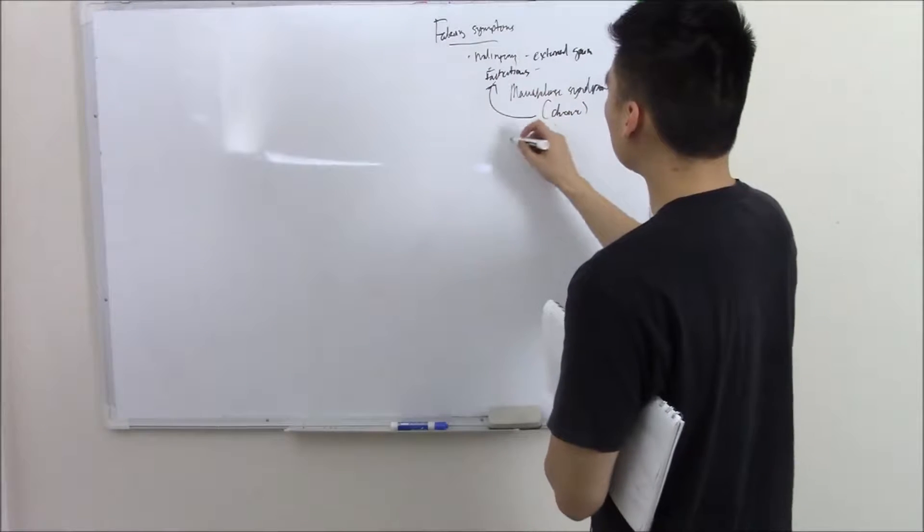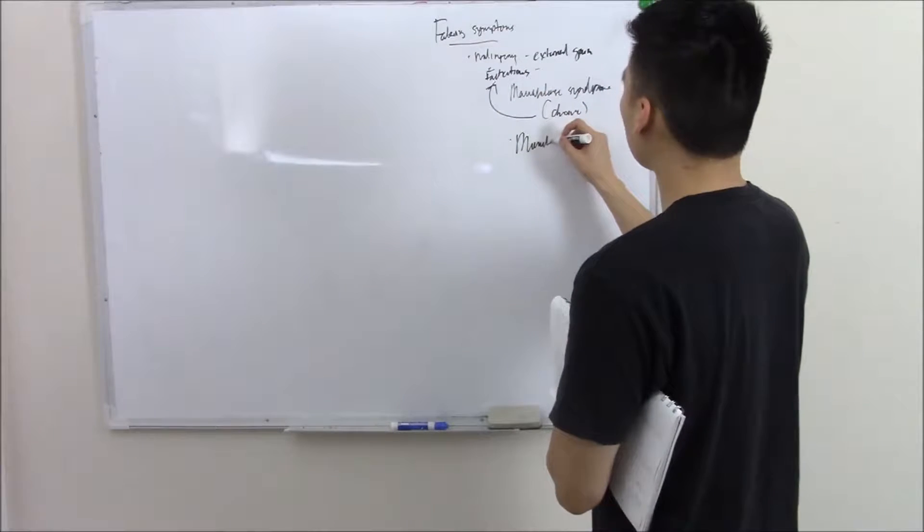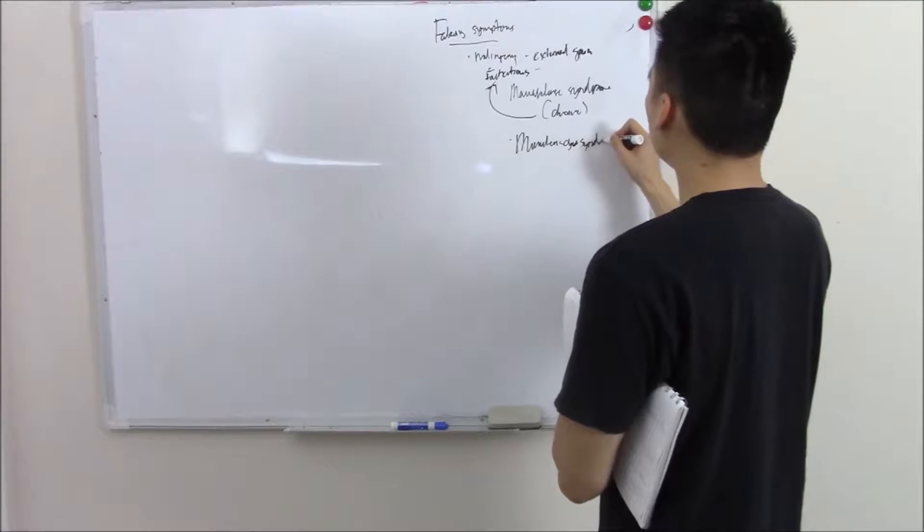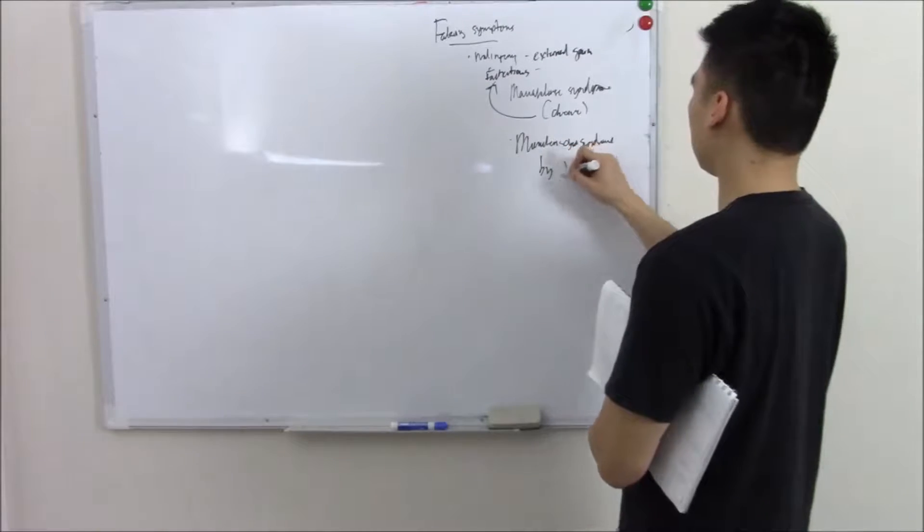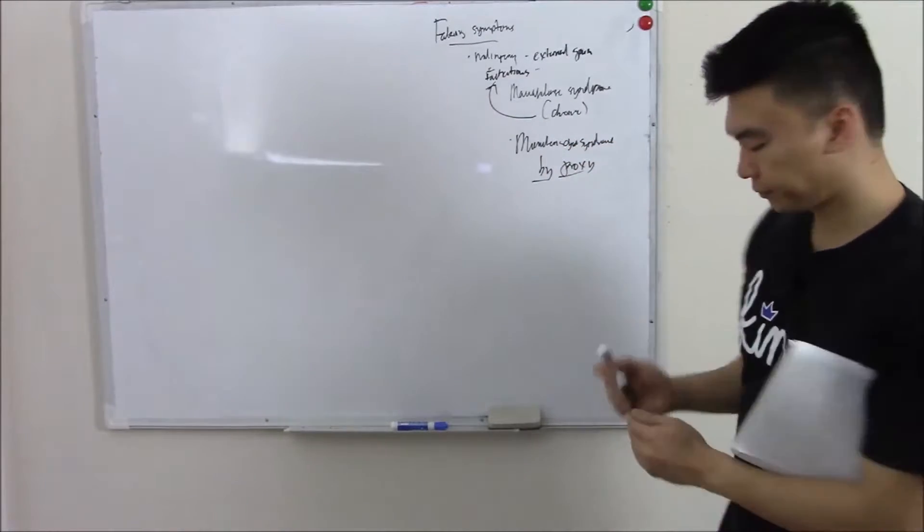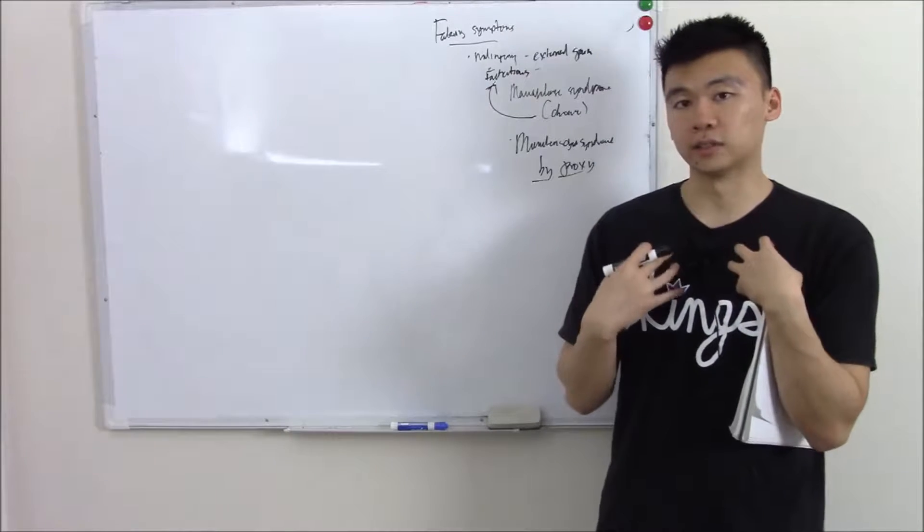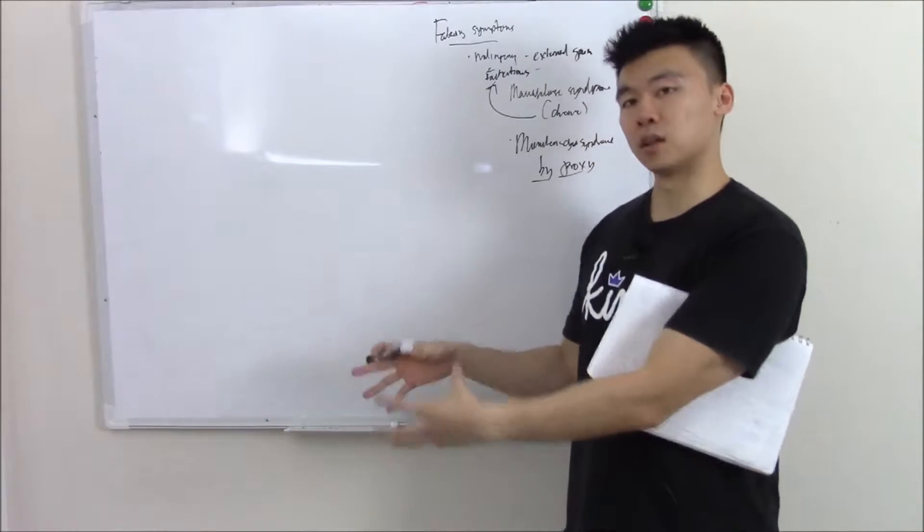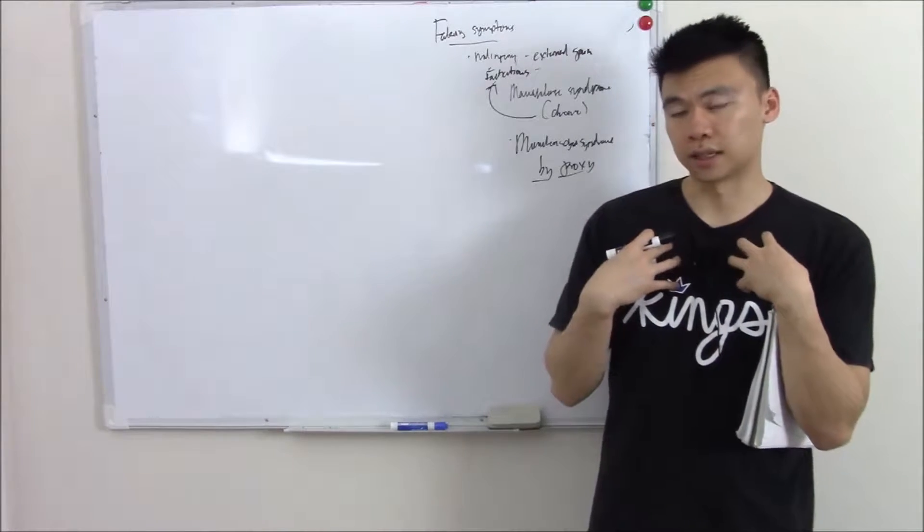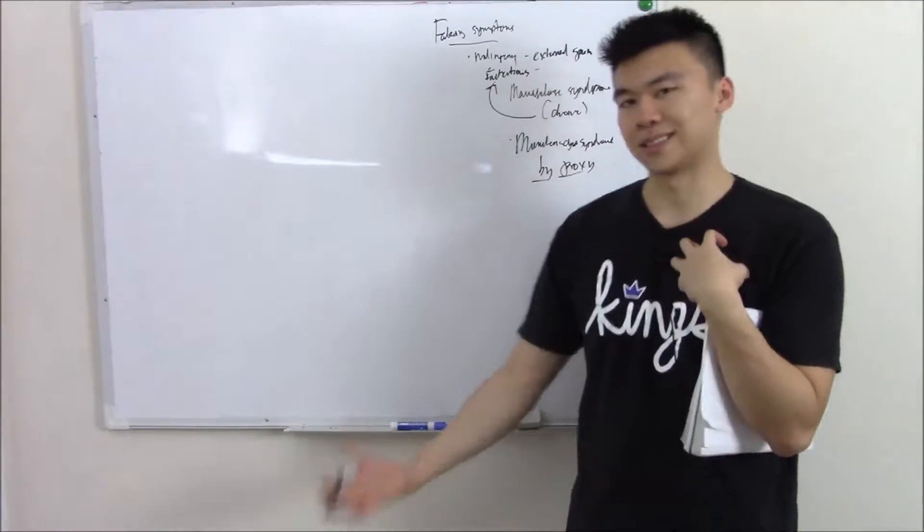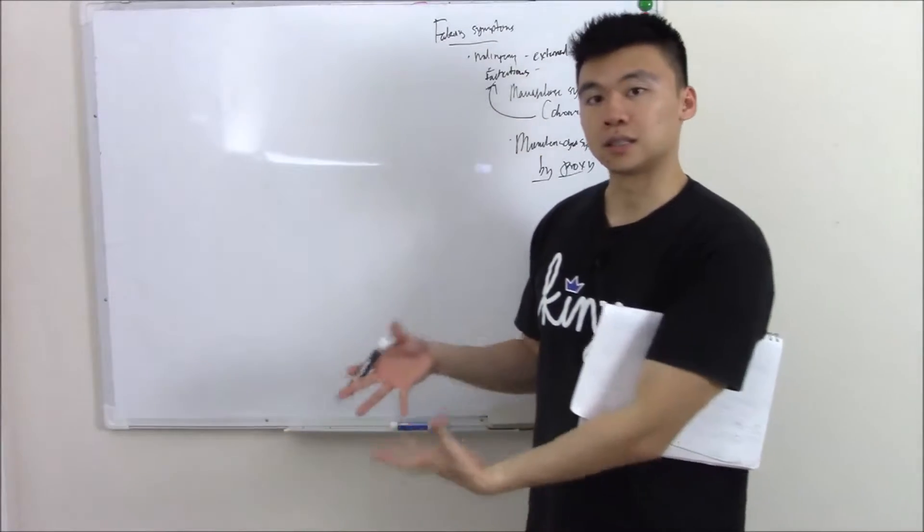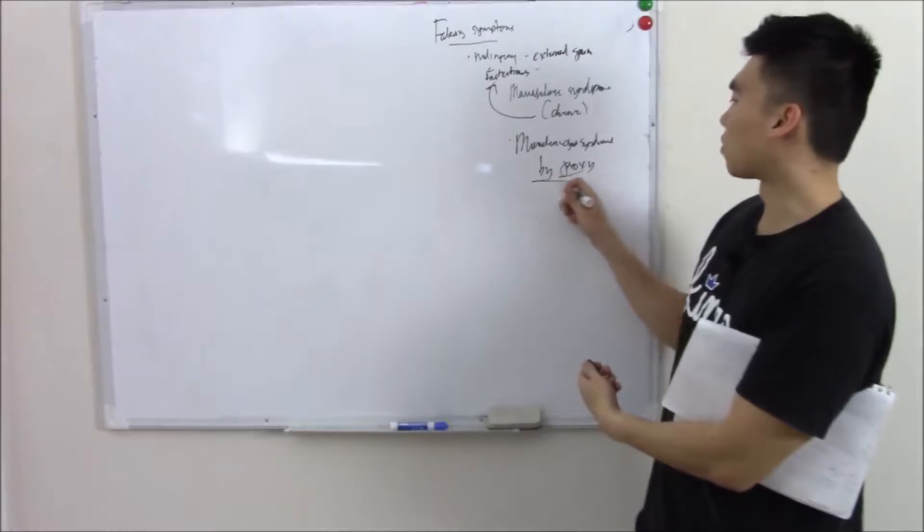Something else you should know is Munchausen syndrome by proxy. You can probably guess by the name what that is. This is when instead of a person faking an illness, a person will say another person is ill. Commonly seen in caregivers. So the caregiver will not say they're sick, but they'll say, oh, my son is sick. They'll fake illnesses on someone else by proxy. That's the by proxy part.